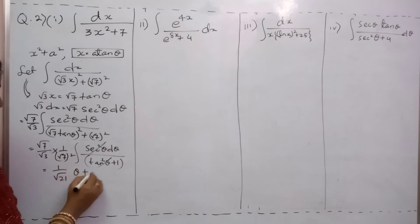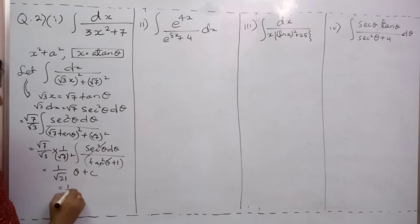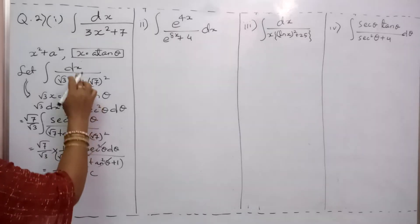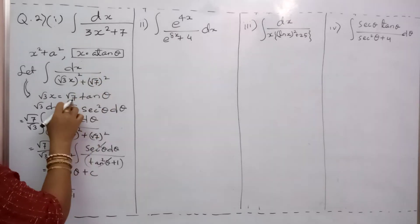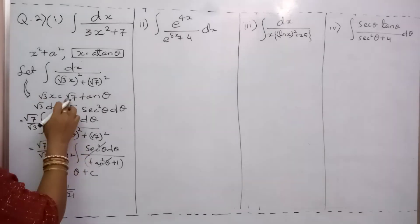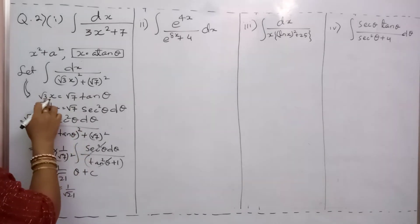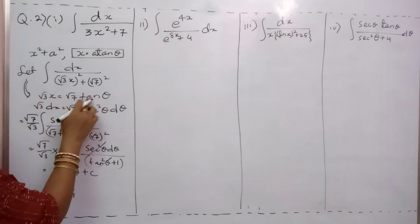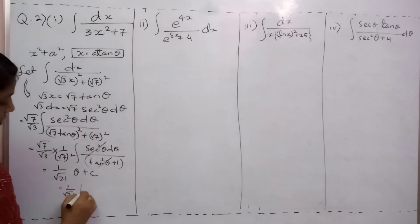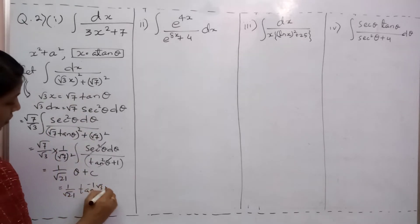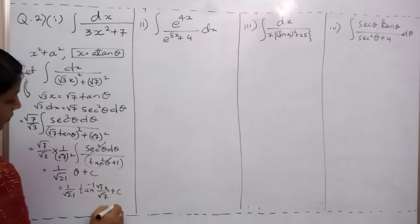Now it is 1/√21. What is the integration of dθ? It is θ + c. So the answer is (1/√21) · θ + c. Now what is my θ? From the substitution, divide to get √3·x / √7, so θ = tan⁻¹(√3·x / √7). Therefore the answer is (1/√21) · tan⁻¹(√3·x / √7) + c.